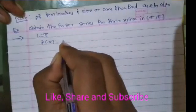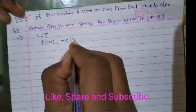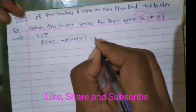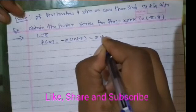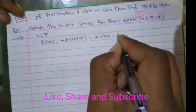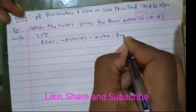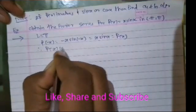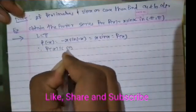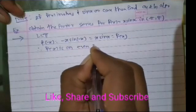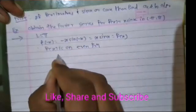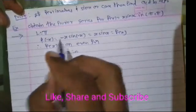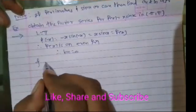If we put x equal to minus x, we get (−x)·sin(−x). Since sin(−x) = −sin(x), this gives (−x)(−sin x) = x·sin(x) = f(x). Therefore f(x) is an even function. If f(x) is even, then bn = 0, so we have to find only a0 and an.